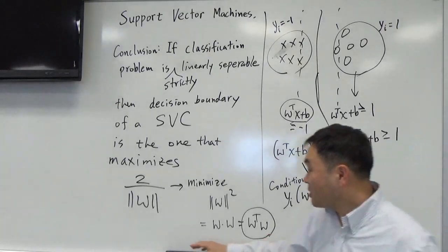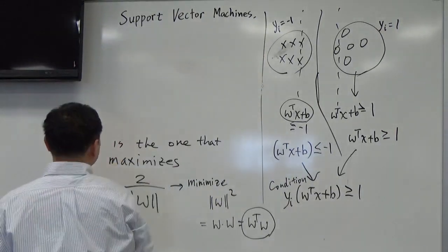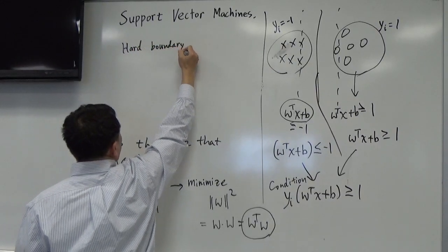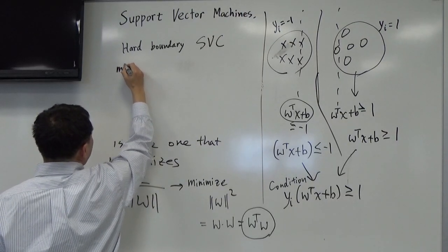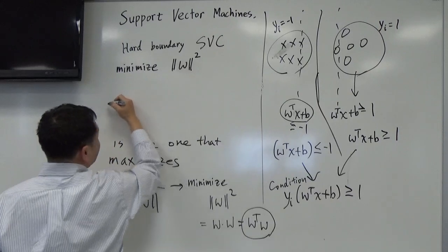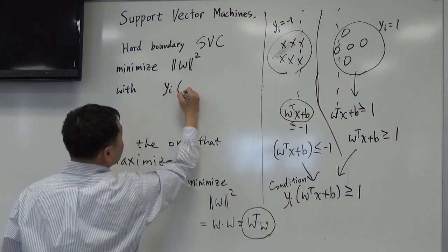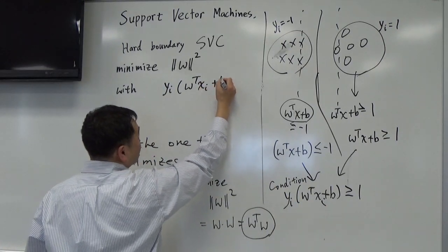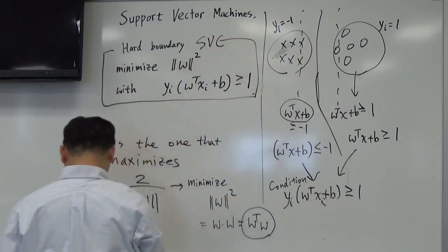This is the condition. What we want is, under this condition, we want to maximize 2 over norm of W. But maximizing that is the same thing as minimizing norm of W squared, because when the denominator is minimized the fraction is maximized. We also put a square there because norm of W squared equals W dotted with itself — WT W in matrix notation — which is easier to differentiate than the square root form. This is the hard-boundary support vector classifier: minimize WT W subject to yi(WT xi + B) ≥ 1 for each xi.